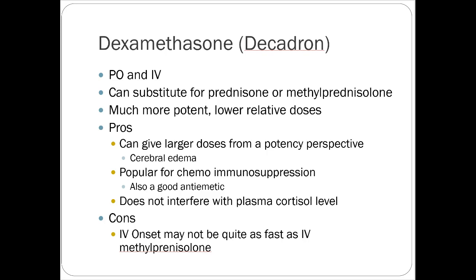Dexamethasone is another really common steroid — available PO and IV with one-to-one bioavailability and good dosing equivalence. It can substitute for prednisone or methylprednisolone. Dexamethasone is more studied in chemotherapy-related nausea and vomiting — it's very popular in oncology. You can achieve larger steroid doses in smaller volumes, which is useful for conditions like cerebral edema or traumatic spinal cord injury. It's also popular for chemo-related immunosuppression. One unique advantage: it does not interfere with the plasma cortisol level.